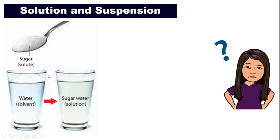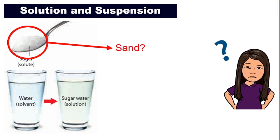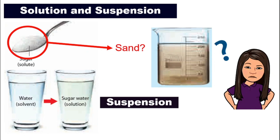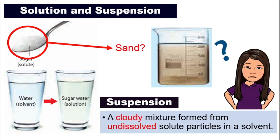Just now we added a spoonful of sugar into water and we know they will form sugar water. How about I replace sugar with sand? If I add in a spoonful of sand into a glass of water and I stir it, what will happen? You will get something like this — you will still see the soil in the water. They will not dissolve. So what is this called? This is not a solution. This is what we call a suspension. Suspension is a cloudy mixture formed from undissolved solute particles in a solvent. If you stir in the sand, you can still see those flat sand particles floating around in the water — it makes your mixture cloudy. So this is a suspension.